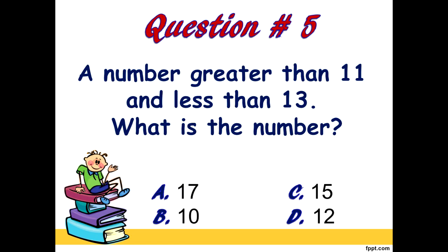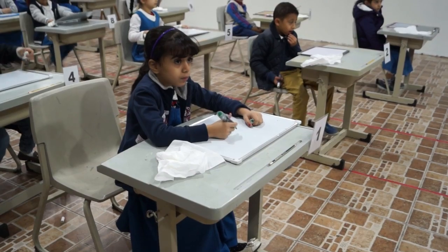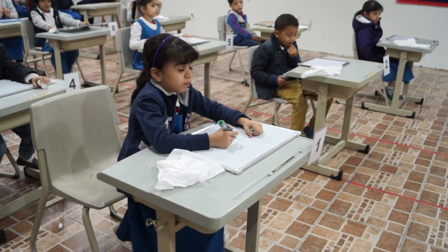A number greater than 11 and less than 13 — what is the number? A, 17. B, 10. C, 13. D, 12. Again, a number greater than 11 and less than 13. What is the number? A, 17. B, 10. C, 13. D, 12. Ready? Go.